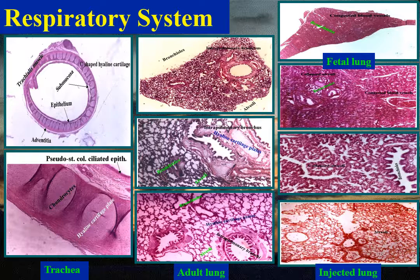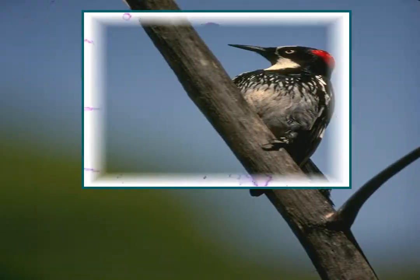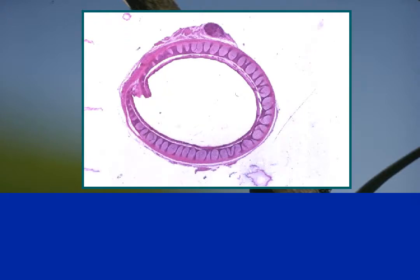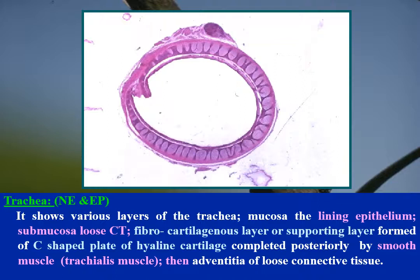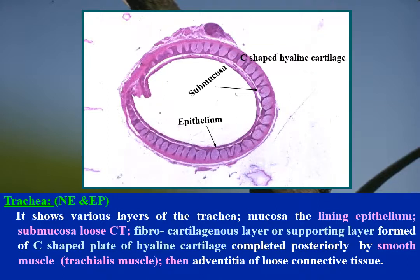Trachea examined by naked eye and eyepiece shows the various layers: mucosa with the lining epithelium, submucosa of loose connective tissue, fibrocartilaginous or supporting layer formed of a C-shaped plate of hyaline cartilage completed posteriorly by smooth muscle, then adventitia of loose connective tissue.